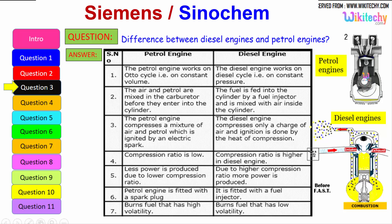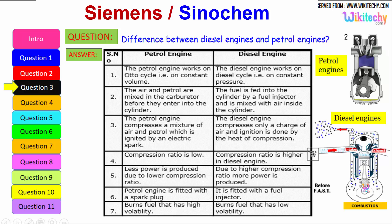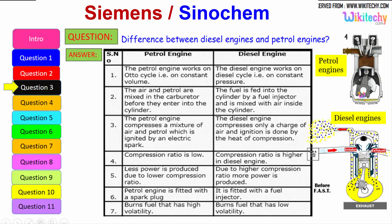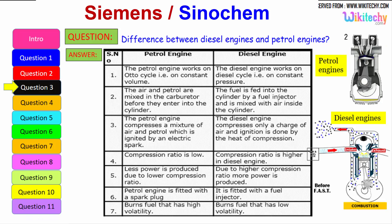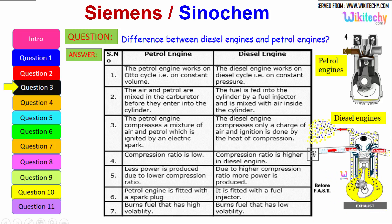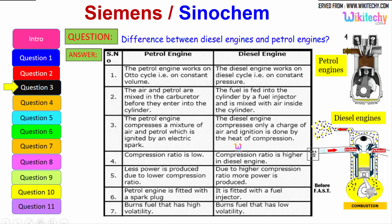The petrol engine is fitted with a spark plug, whereas the diesel engine is fitted with a fuel injector. The petrol engine burns fuel with high volatility — petrol is highly volatile — whereas the diesel engine can burn low-volatility liquids as well. These are some of the differences between the petrol engine and the diesel engine.